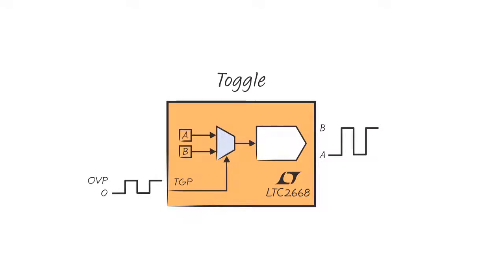Another useful feature is the toggle function. Each DAC has two data registers that can be written independently. Once written, all DAC outputs can be set to either register through a single SPI command or by the toggle pin.